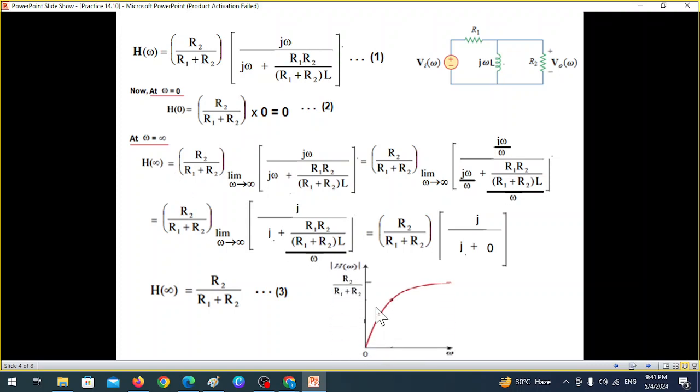And so we are at ω zero and ω infinity. And therefore, we can now plot. The curve will be something like this. At start, it will be zero. And at end, it will be R2 over R1 plus R2. Now, this graph you can see is high-pass filter is stopping the low-frequency signal and passing the high-frequency signal. So this is our, the second answer. It is high-pass filter. And that is what is given in the book, high-pass filter.